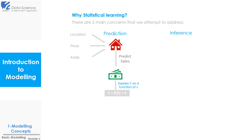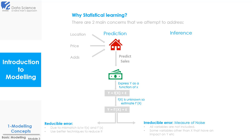But before that, let's understand how we can estimate f(x). We will not be able to know the exact function of x on which y is based, because we are not studying the whole population. So we can only approximate to the closest possible function, which will be an estimate of the actual function. Hence we will write y as a function of f̂(x), indicating f̂(x) is an estimate. Now epsilon here is an error constituted of two components: reducible error and irreducible error. Reducible error is an error which arises due to the mismatch between the actual f(x) and our approximation f̂(x). We can reduce this type of error by using better techniques or algorithms while building our model.